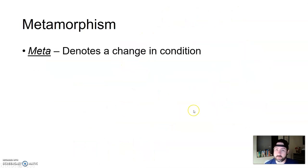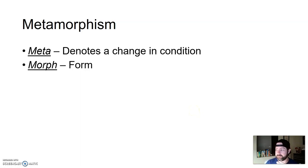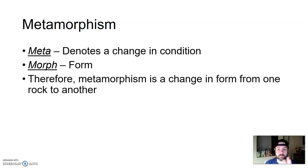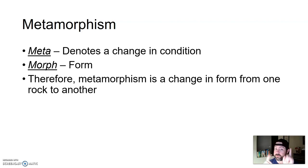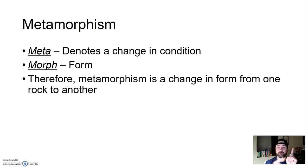Let's break down that word. Meta denotes a change in condition. Morph means form. So, a change in form. Metamorphism is a change in form from one rock to another rock. So there's an existing rock, some rock that already exists, but we're going to do something to it to change it to something else — to morph it.